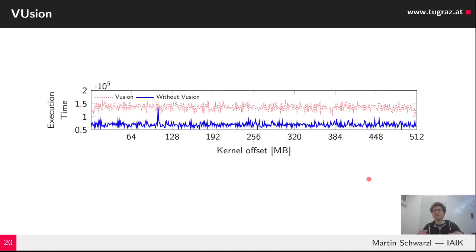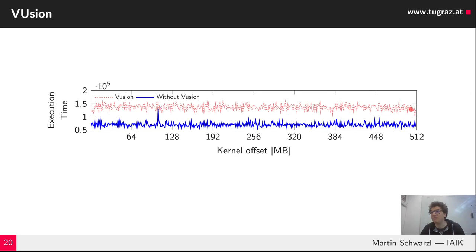For the VUsion patch, you can see that when the patch is applied, there is fake merging — same-behavior merging — and we can no longer distinguish the correct offset for the KASLR break.